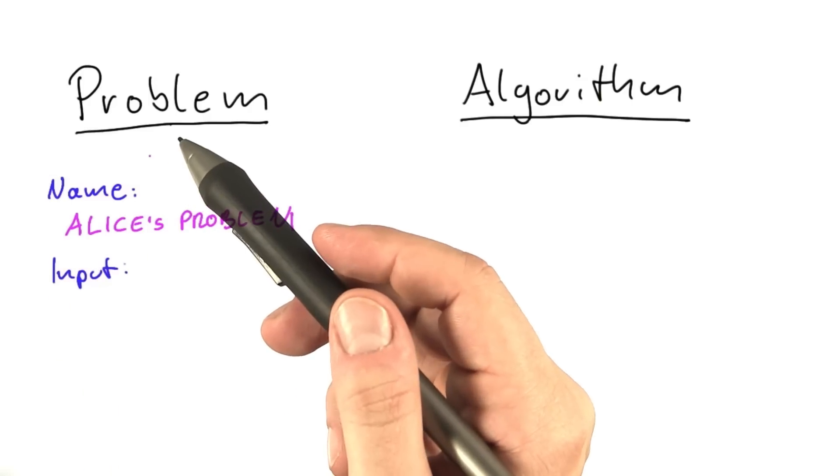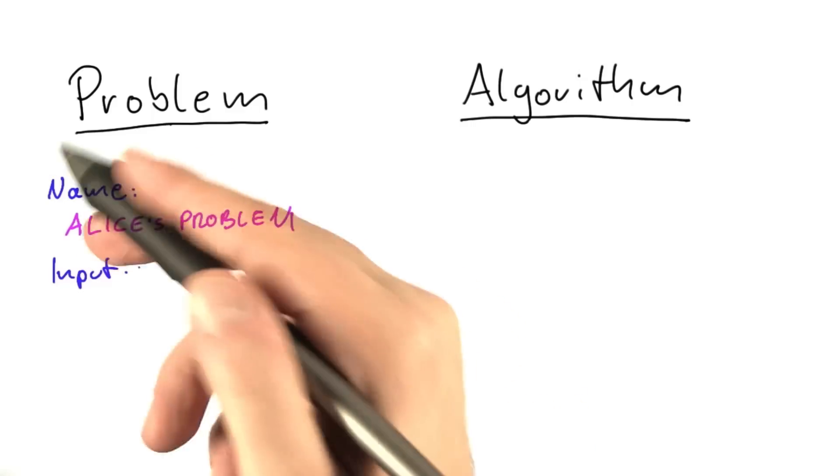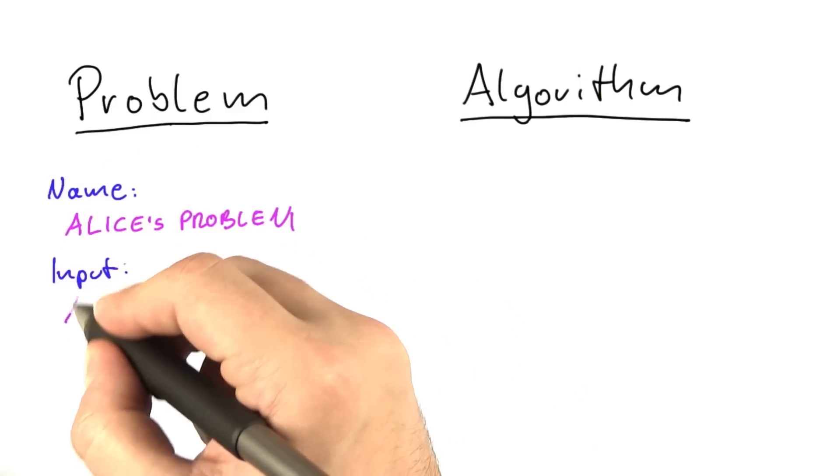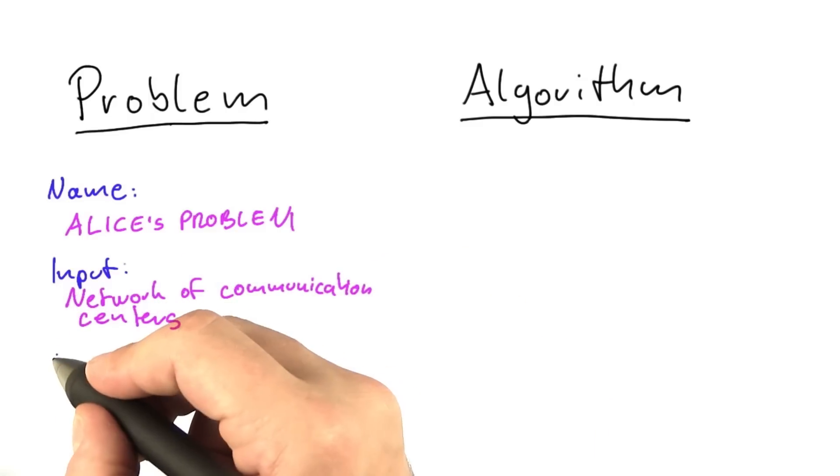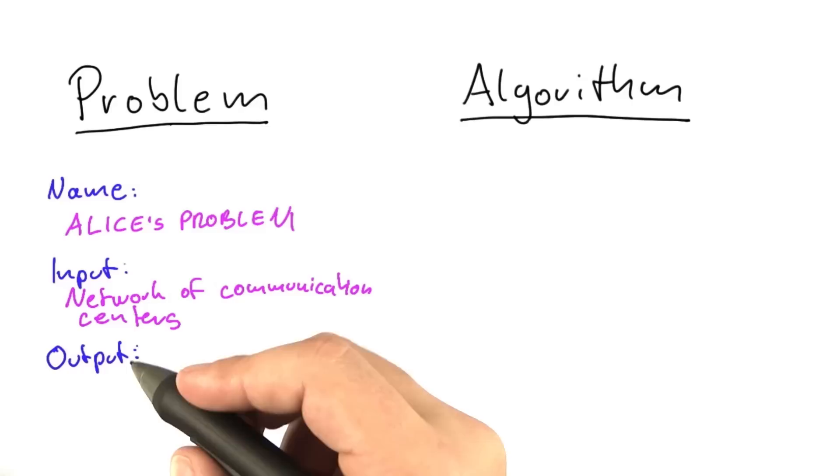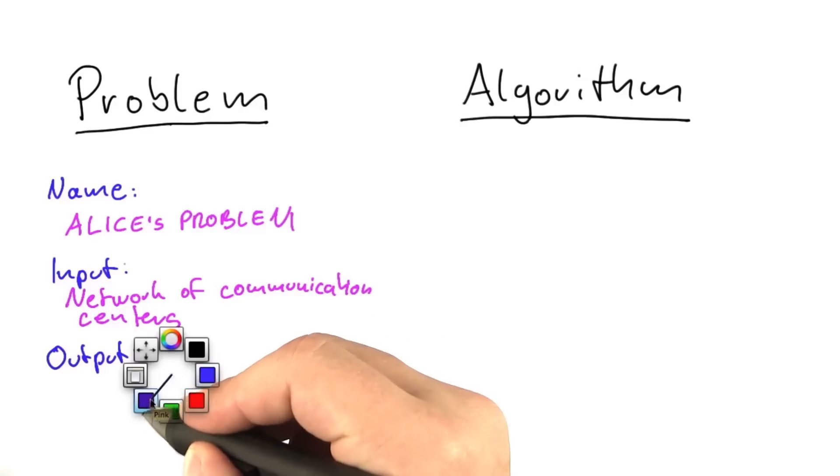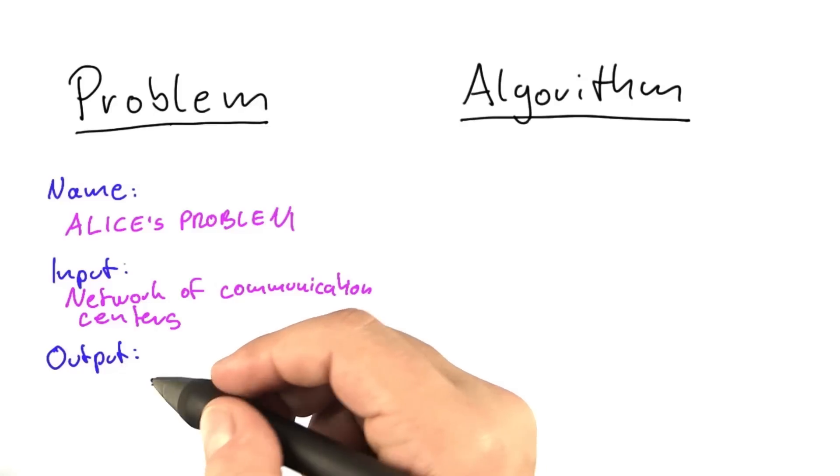For each problem, we also need to say something about the input that we're expecting. In this case, it's a network of communication centers. And of course, we also need to say something about the output. In this case, it would be the minimum number of monitoring devices to cover all cables or connections.